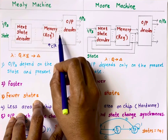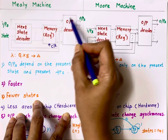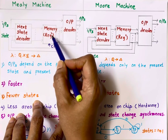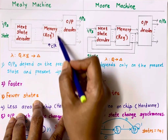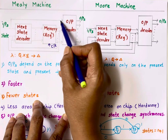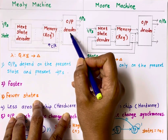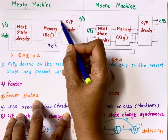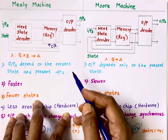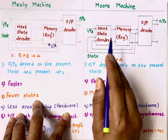The basic difference is that in a Mealy machine, output depends on the present state — that is the present output of memory elements, which are flip-flops — as well as the present input. So output depends on present state as well as present input, which means for a single state there can be multiple outputs.